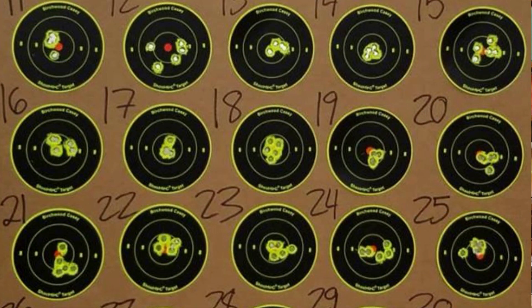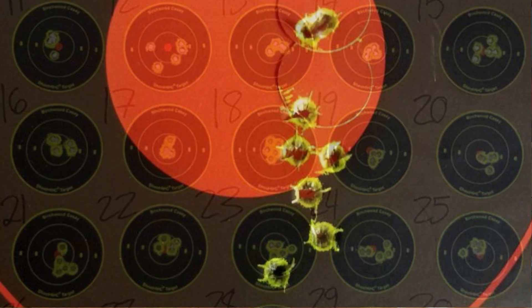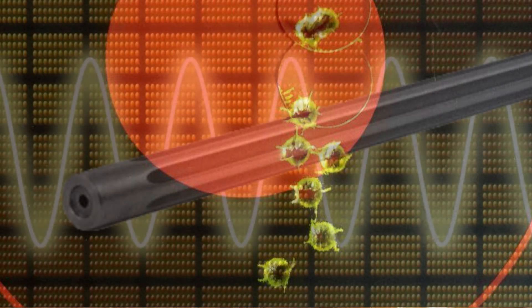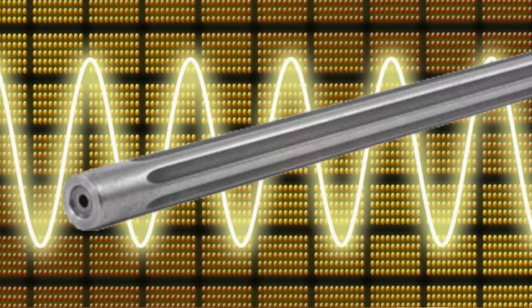In the old days, reloaders would just load up powder charges in half-grain increments, seat a bullet to the book-specified overall length, shoot five-shot groups, and just pick the best one. Then Audette invented the ladder test, and everything pretty much changed in reloading. That's when we started to learn more about barrel harmonics. From that point on, we've been desperately searching for new ways to find the best load in the shortest period of time, with the least components wasted. And this has been going on for probably over 50 years now.